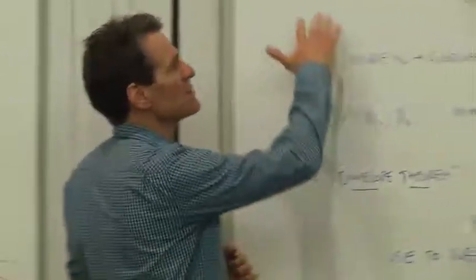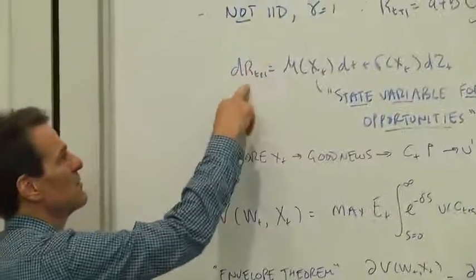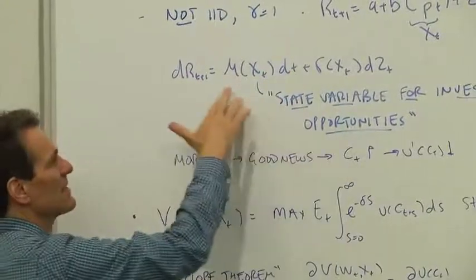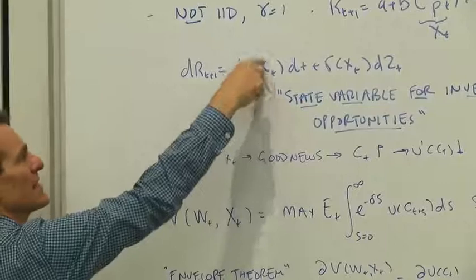We'll do this in continuous time. For example, suppose that the returns can be forecast with X. That means that they might follow a process like this, where X is higher, that means the expected return is higher.